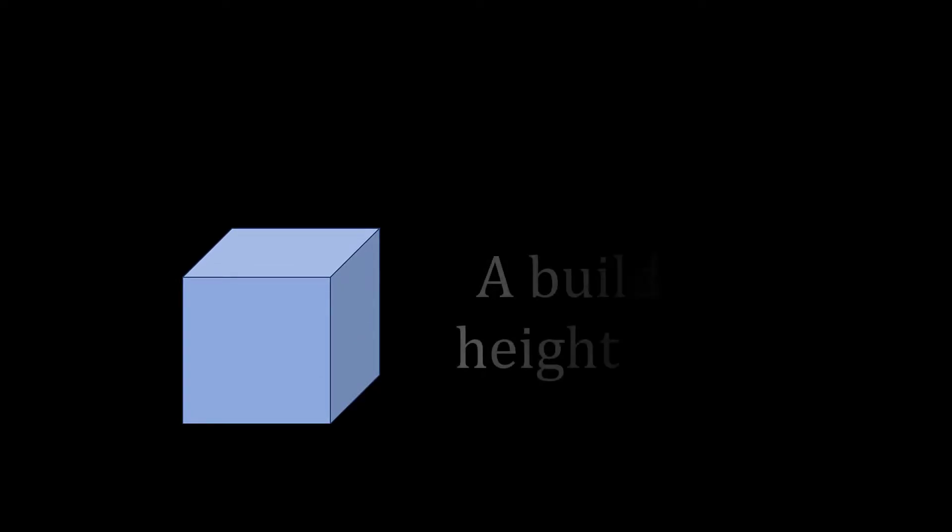After thinking for a bit, you come up with a few assumptions to guide your proof. Firstly, you are confident in your ability to construct a one-story building. Of course, this is the foundation of any taller building. More importantly though, you know that, given any pre-existing building, you can always add one more floor to it.